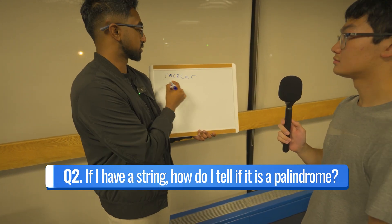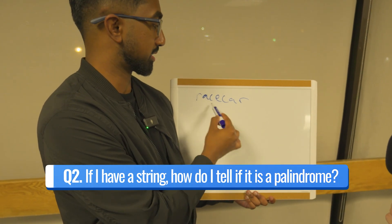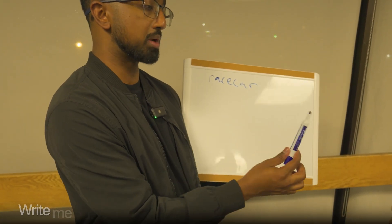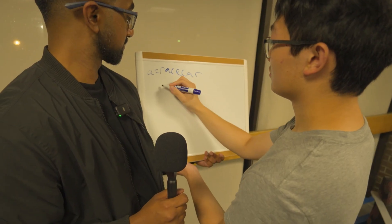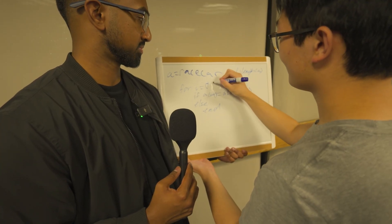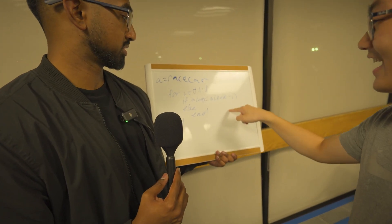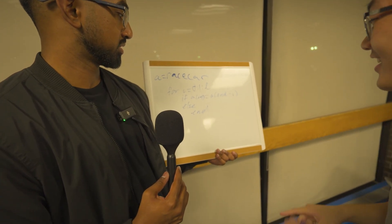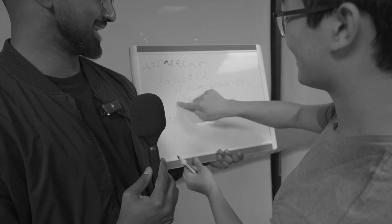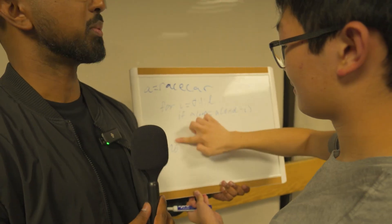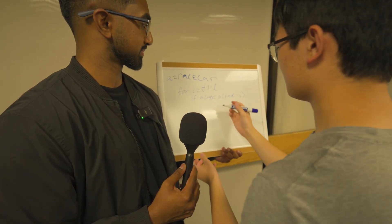Palindrome is a word like 'race car' where the first and the last letters are the same, and it goes all the way through. So how do you write out a function that can tell if a string is a palindrome? I plus one... one to L. The only thing I'm not sure of is if this is going to end if it doesn't work. So you have an empty if statement. Oh, that is also true. I'm helping you debug — I want you to win the hundred dollars. Make this a true statement.